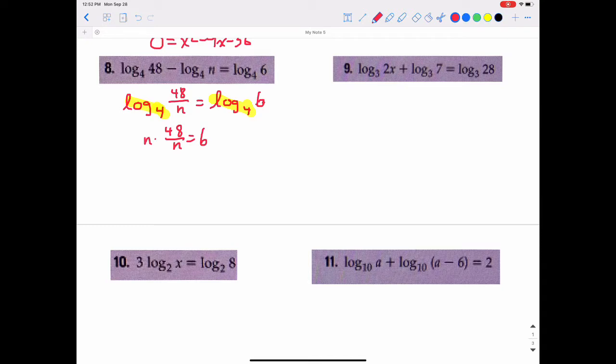I can eliminate the fraction by multiplying both sides times n. So that gives me 48 equals 6n divided by 6, and we get n equal to 8. Does that make sense if I replace the n with 8 in the original problem? If I replace this n with an 8, it means log base 4 of 8. That is possible to do. So that is the correct answer, n equals 8.